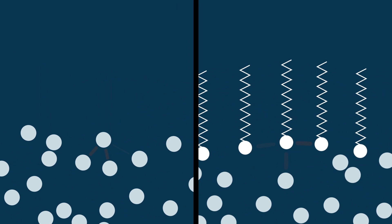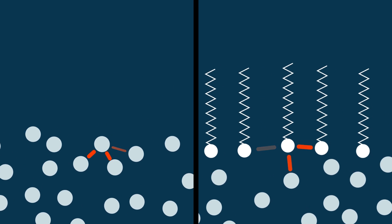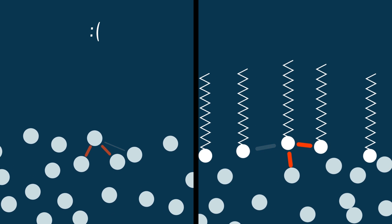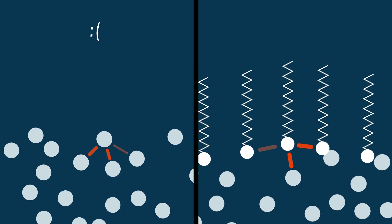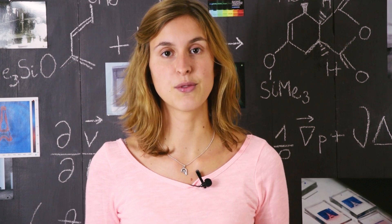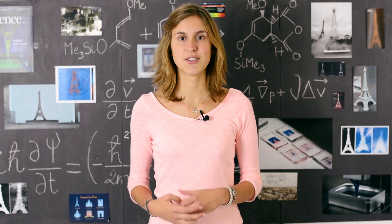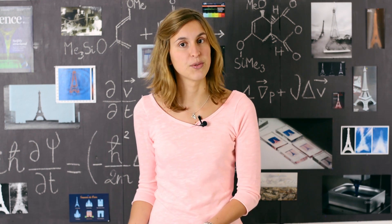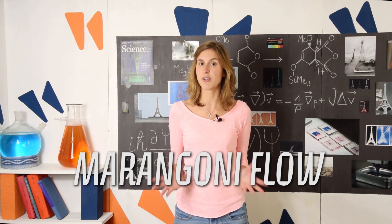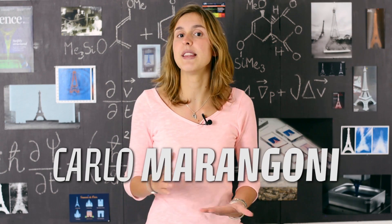Remember we said that in water, surface molecules were frustrated because they have fewer attractive interactions than the ones in the bulk. Here it's different. A soap molecule isn't frustrated because its hydrophobic part wouldn't have created attractive interactions with water anyway. So from the liquid's point of view, it's easier to create a surface with soap than with water. Soap molecules are called surfactants because they act on surface tension — in fact, they reduce it. And the motion we observed with our particles between two areas of different surface tensions is called the Marangoni flow, first studied by Italian physicist Carlo Marangoni in the mid-19th century.